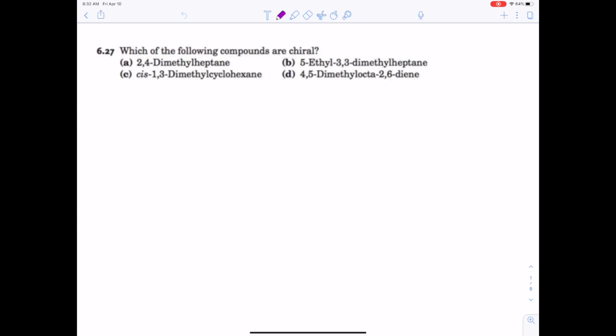Let's try problem 27 from chapter 6. This question asks which of these are chiral. That means it has an enantiomer, its mirror image is not the same, and it will rotate plane polarized light. It's optically active - those all mean the same thing.